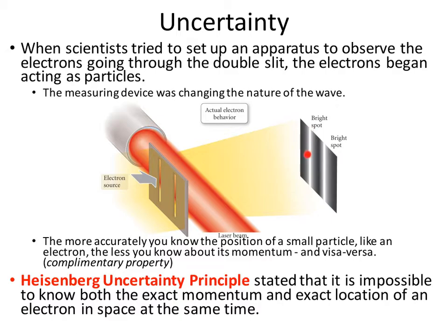They actually just saw two bright spots in line with these slits. So as they set up this measuring device, the actual nature of the electron was changed. Without the measuring device, we saw an interference pattern. With the measuring device, we saw two bright lines. What came from this was that you cannot accurately know the position and the momentum of something small, like an electron, at the same time — you either know one or you know the other.